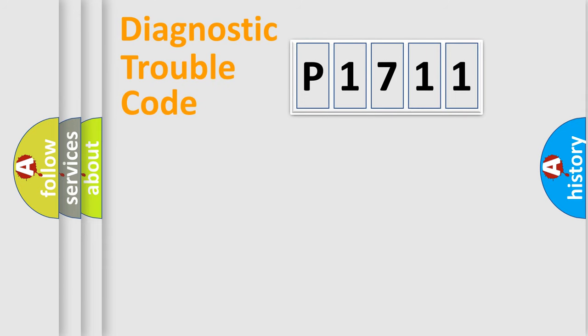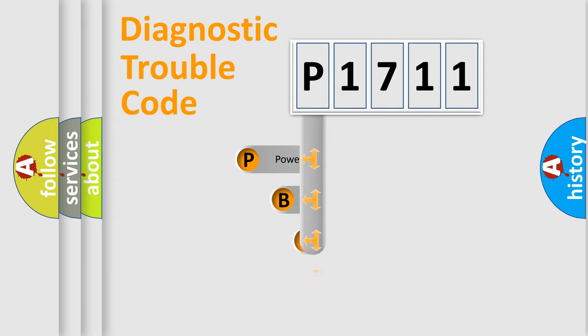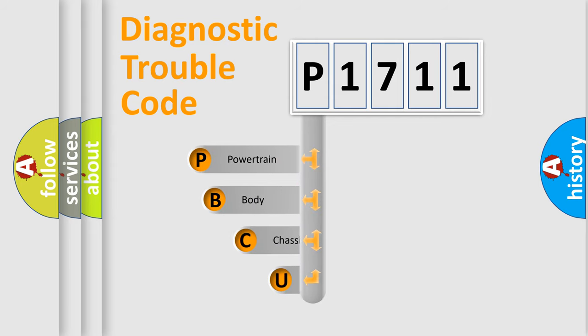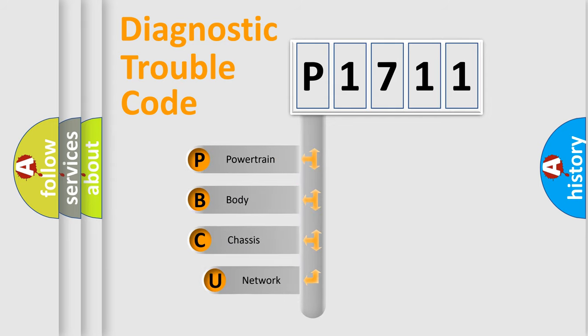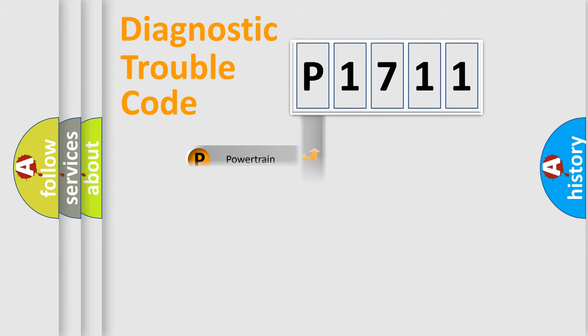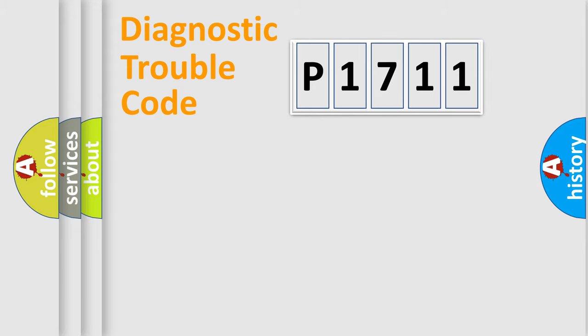Let's look at the history of diagnostic fault code composition according to the OBD2 protocol, which is unified for all automakers since 2000. We divide the electric system of an automobile into four basic units: Powertrain, Body, Chassis, and Network.